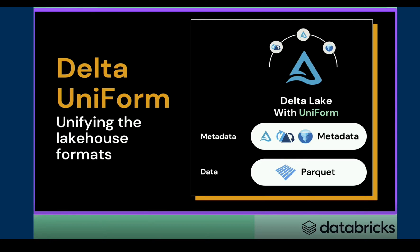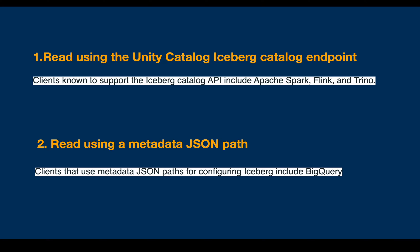Even though Delta, Iceberg, or Hudi each have their own metadata, when writing data using UniForm, it writes metadata for both Delta as well as Iceberg. This means we can now read the data using various clients that support Iceberg, including through the Delta Lake when UniForm is enabled.